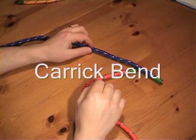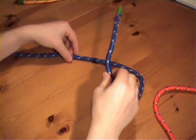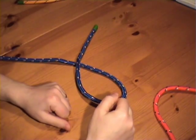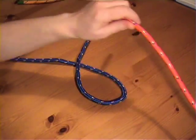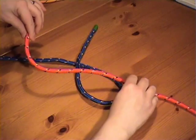The Carrick bend. We make a crossing turn in the working end of the first rope. Then we take the working end of the second rope and we weave it up and down like this.